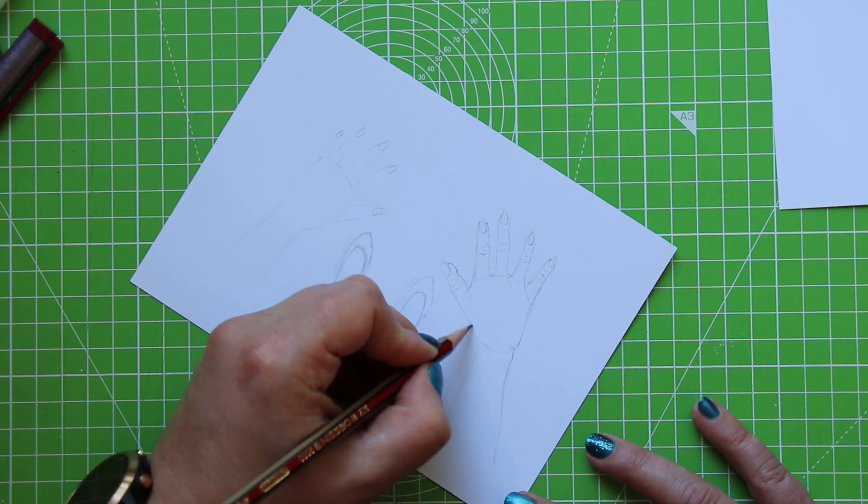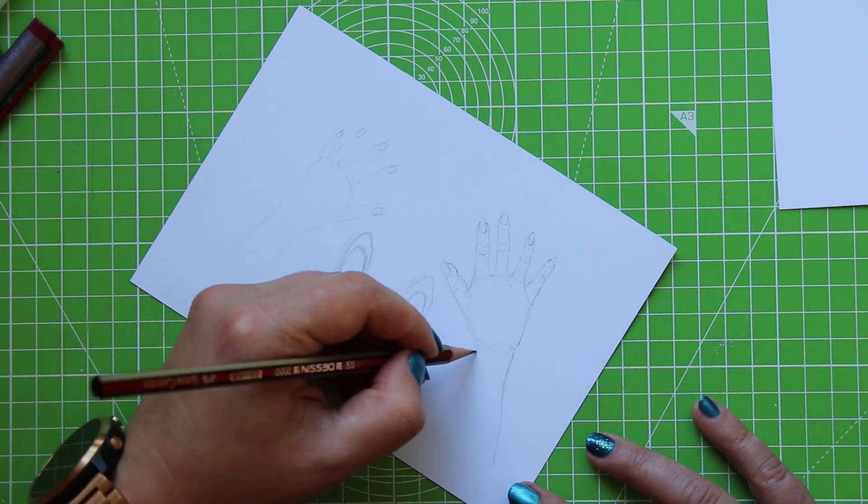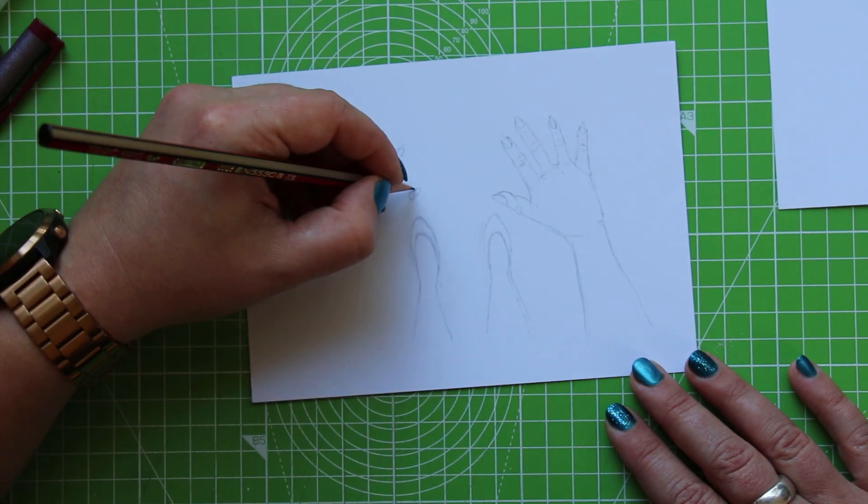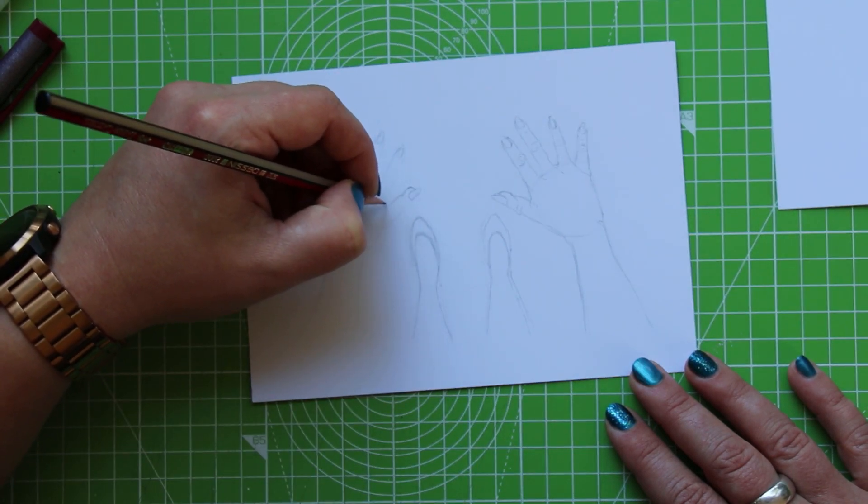It's just really difficult. You want to put some creases in there so that you can denote the knuckle joints without making them overly wrinkly.